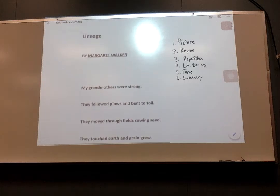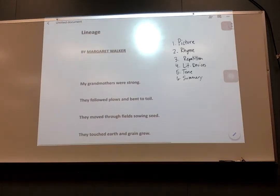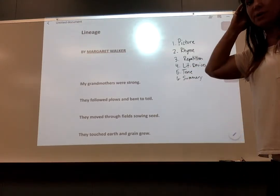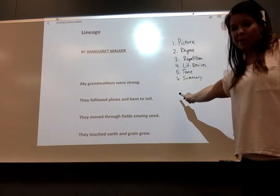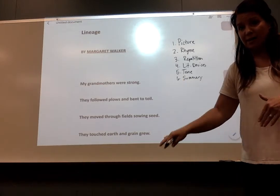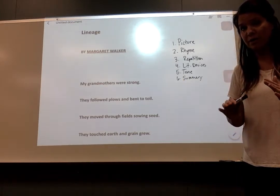Okay, we're looking to annotate this poem lineage. You can use a picture as one annotation. You can use rhyme, repetition, word devices, tone, and summary. So let's start by drawing a picture. I drew a picture on mine of a lady with a basket in a field. It's pretty crude, but that's what I drew.